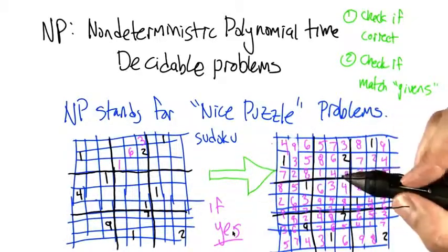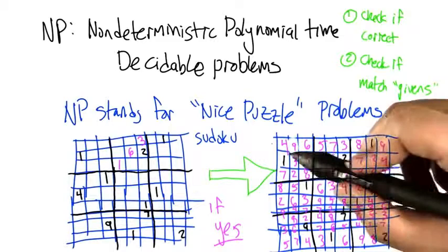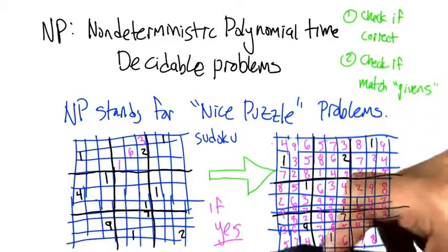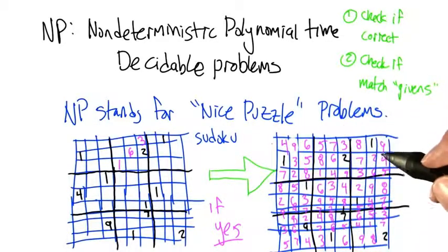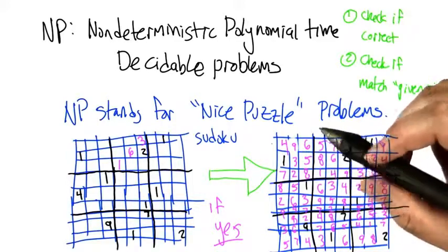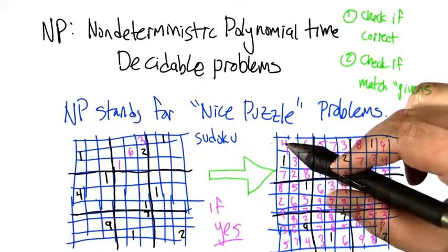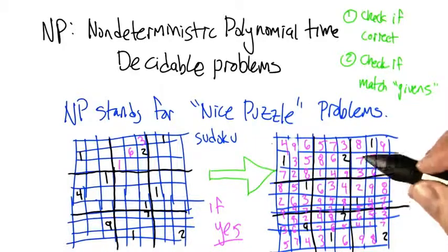If the answer is yes, then I can prove it to you by simply giving you a small accepting certificate, which in this case just means a filled in Sudoku board. So if I fill in the Sudoku board, you can very quickly do two things.